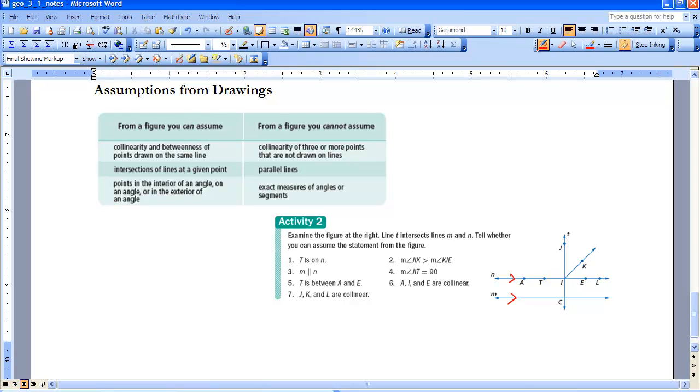And then the other thing you can't assume is exact measures of angles or segments. For example, this angle, JIT, appears to be 90 degrees. But there's nothing there that told me that until I wrote this little symbol in here. So if there's nothing there that tells me it's 90 degrees, I can't assume it. You remember from up above that this is the symbol for 90 degrees. So if that is given to us, then we can say it's 90.